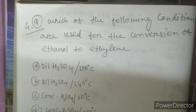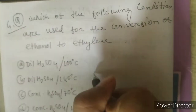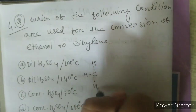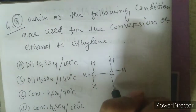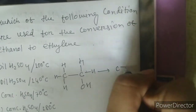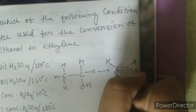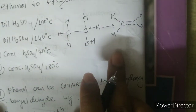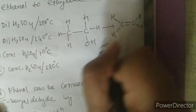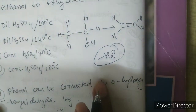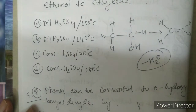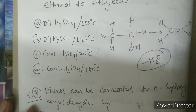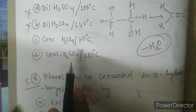Question four: which conditions are used for conversion of ethanol to ethylene? We need to convert ethanol (CH3CH2OH) to ethylene (CH2=CH2). If you observe, H2O — a water molecule — is removed, so this is a dehydration reaction. When they mention a reagent and it's a dehydration with H2SO4, always remember it is concentrated H2SO4, not dilute. So you can cut options A and B easily.